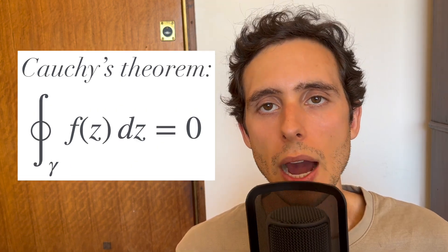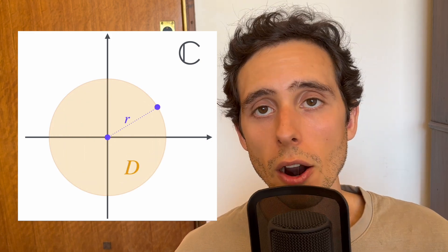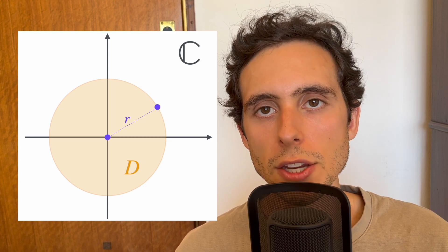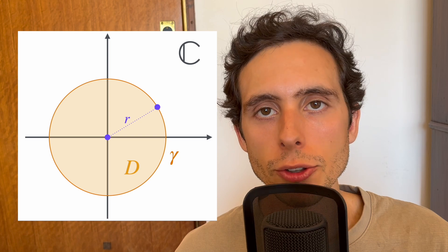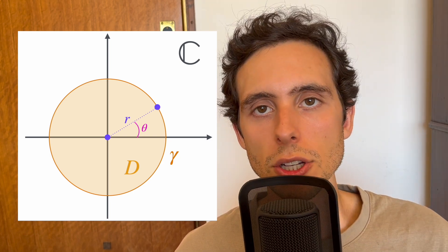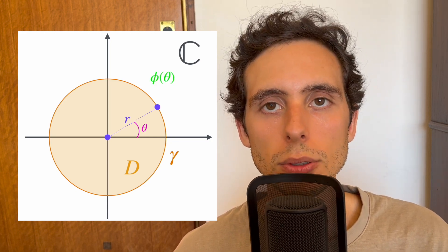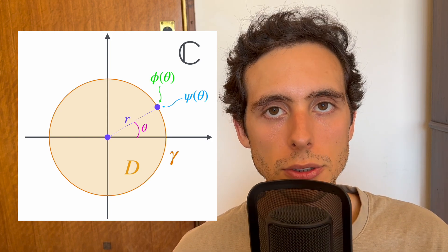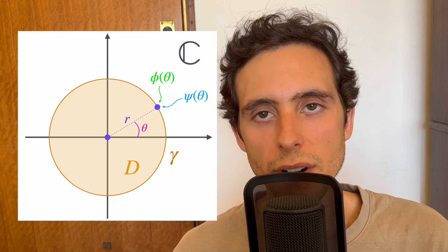Let's apply Cauchy's theorem now. Consider a circular region d of radius r centered at the origin on the complex plane. The electric potential phi and the stream function psi are specified on the boundary of the closed curve gamma, which is a circle. These are functions of a variable theta, which represents the angle. So phi of theta represents the electric potential on the boundary, and psi of theta the stream function on the boundary.